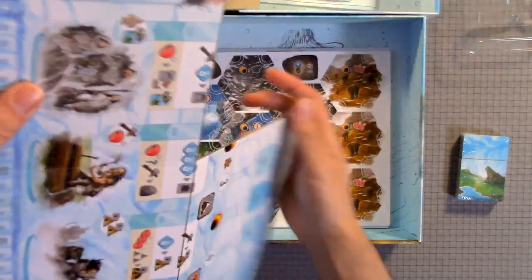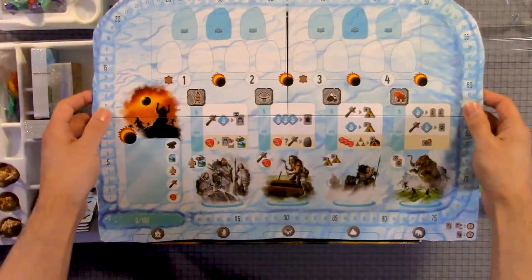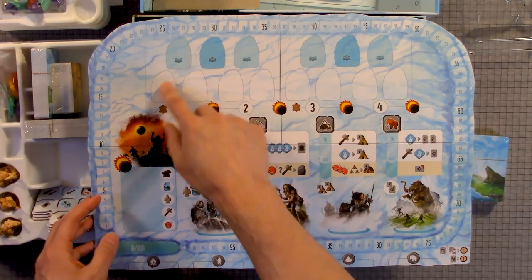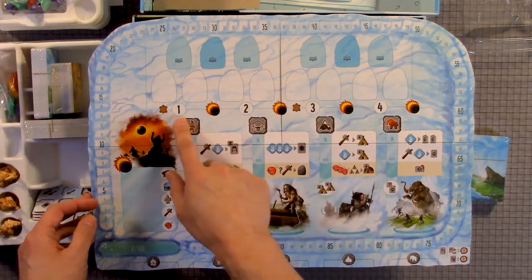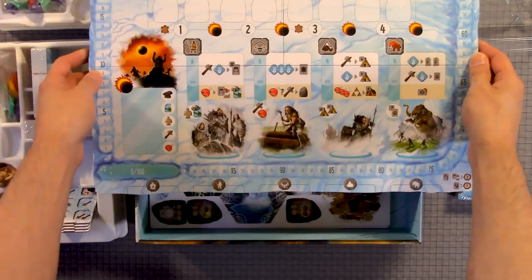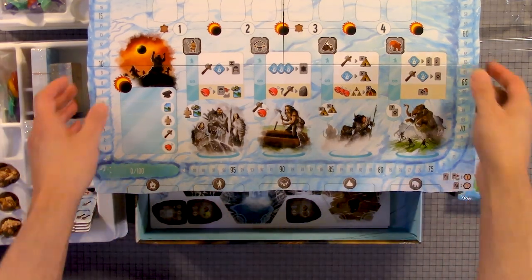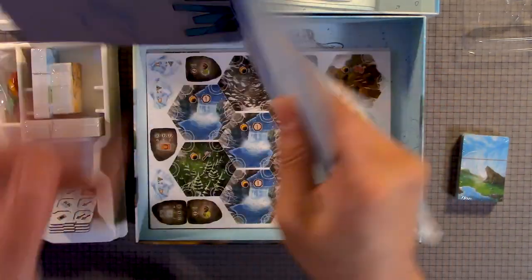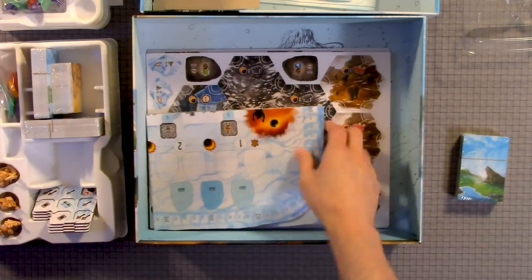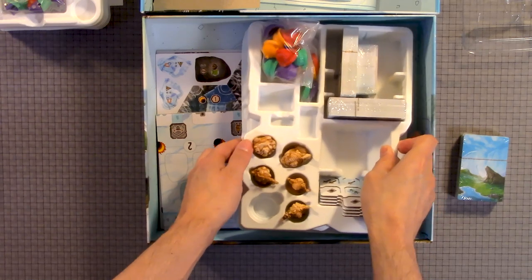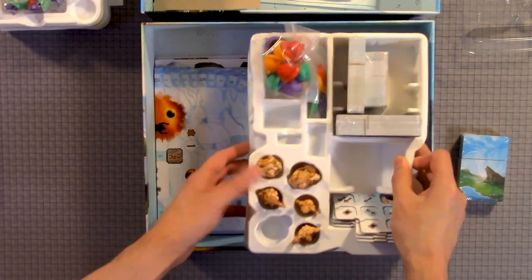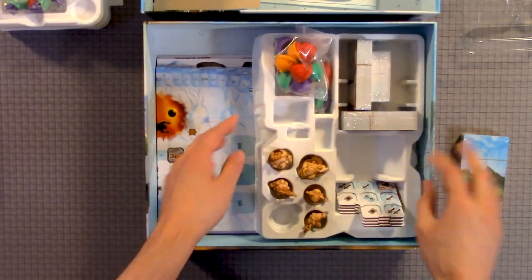This looks like the main board. You have scoring from one all the way to 90, 100. Some information here. You have one all the way to four. Here we have where you collect resources or something. Here's where you put cards and some more information.